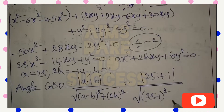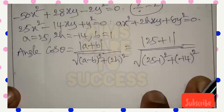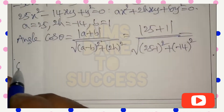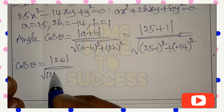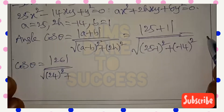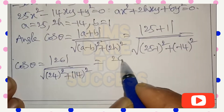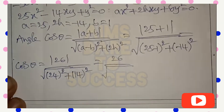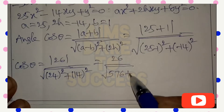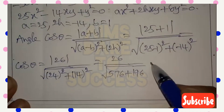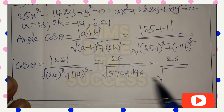Substituting the values: cos θ = |26| / √[(25 - 1)² + (-14)²] = 26 / √[24² + 14²] = 26 / √[576 + 196] = 26 / √772.